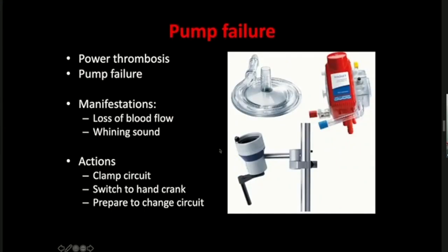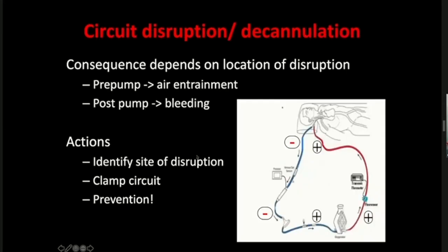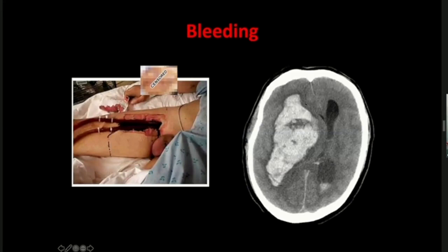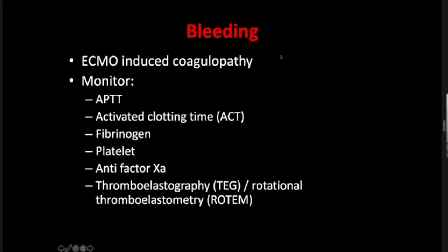Other complications: pump failure, which we have discussed, is a mechanical failure — if rotated to an ICU with an ECMO patient, always find out how to perform hand cranking. Circuit disruption and decannulation are catastrophic; immediate action is to clamp the line, stop the pump, commence rescue ventilation, and quickly call for help to re-establish a new circuit. Bleeding is a common complication — at or outside the site of cannulation — with catastrophic sites being intracranial, GI, and retroperitoneal. Intracranial bleeding is usually life-limiting and may require consideration of withdrawal of ECMO. The ECMO circuit itself can induce a coagulopathic state. If bleeding occurs, we may need to correct coagulation components, top up platelets, and replace fibrinogen. Products affecting factor Xa or protamine are rarely given as they can cause catastrophic circuit thrombosis.